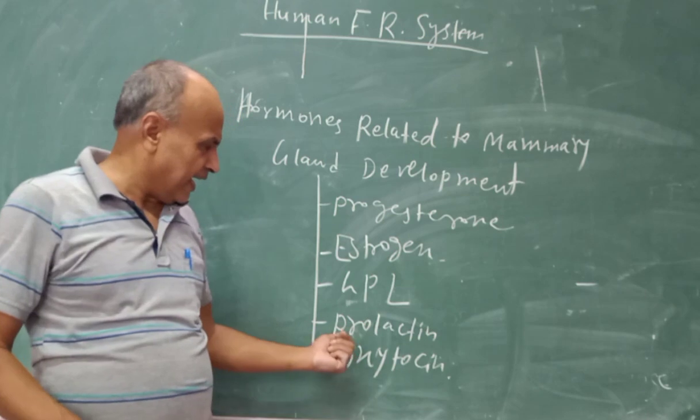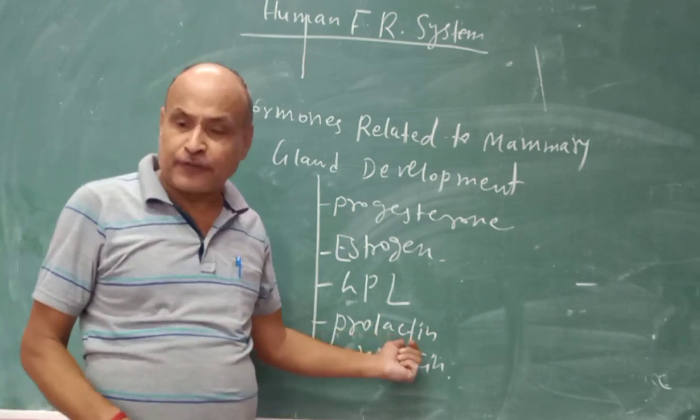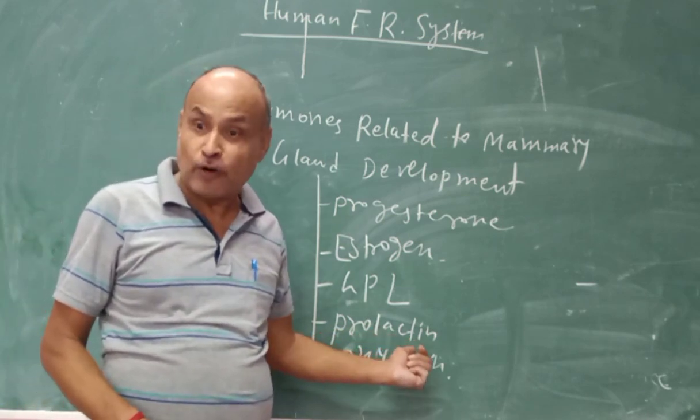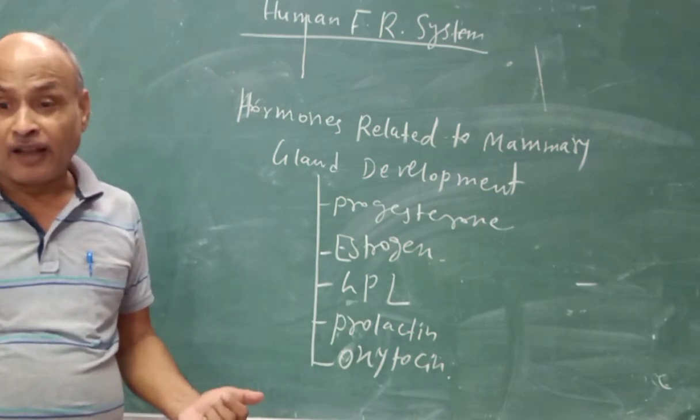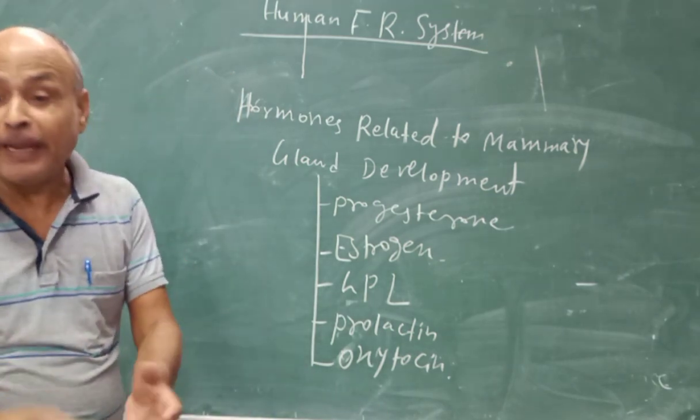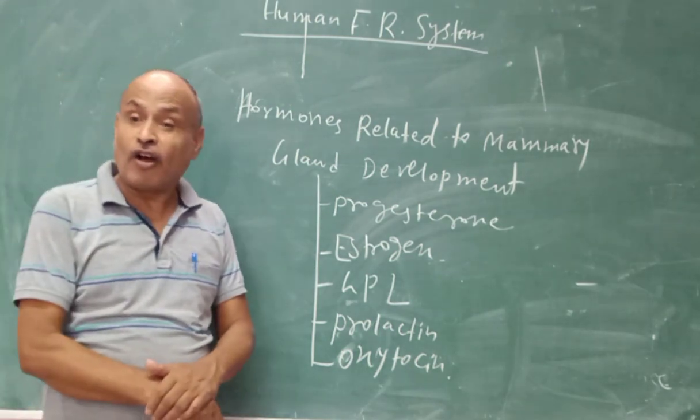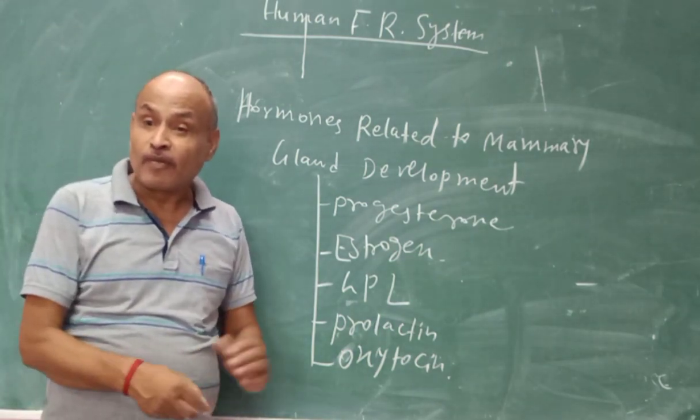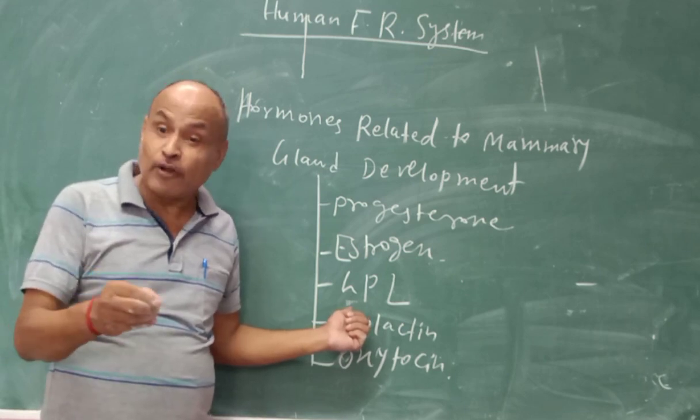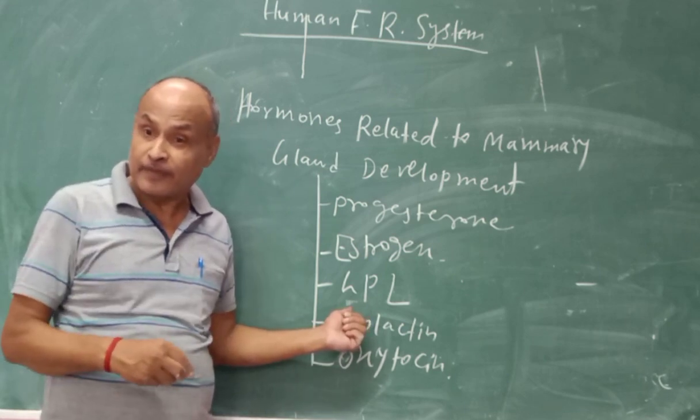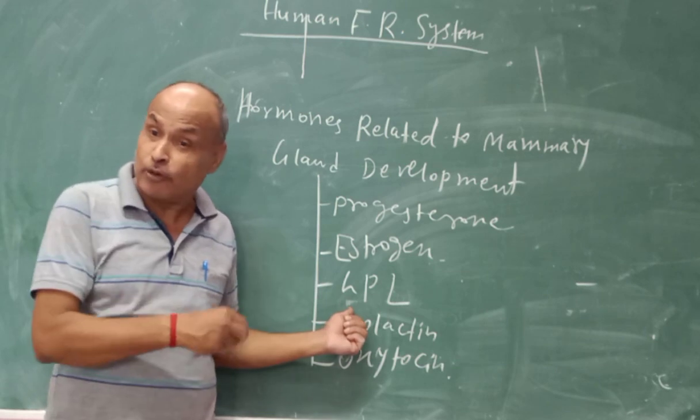And prolactin helps to release the milk from the ducts, from the alveolar ducts. Alveolar cells, which is the alveolar ducts.